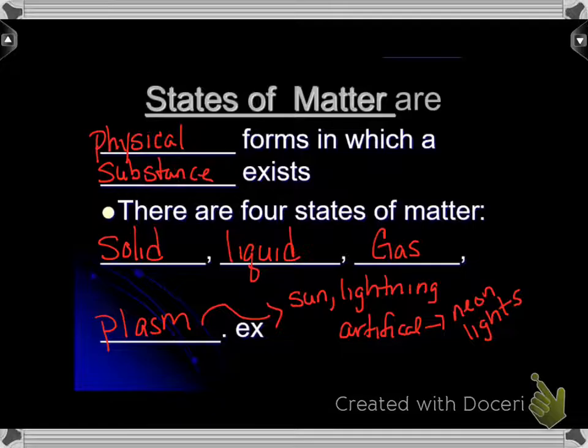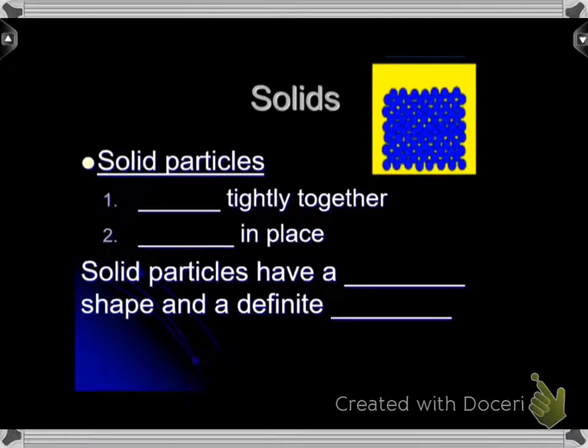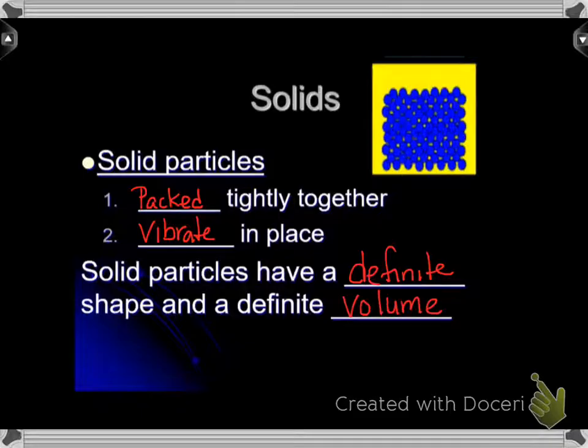Now we're going to talk about solids, liquids, and gases in different sections. First, solid particles are packed tightly together and they vibrate in place. Obviously we can't see them vibrating, but they are. Solid particles have a definite shape and a definite volume. All those little circles are the particles packed together, and they have a definite shape and a definite volume. You could take measurements like length, width, height, volume.